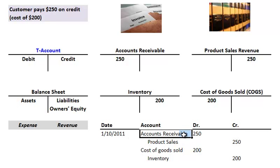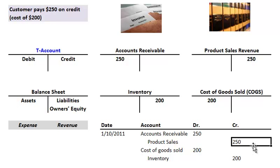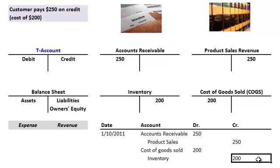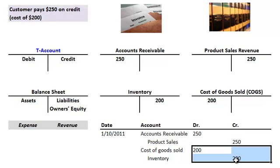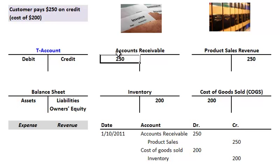The corresponding offsetting entry is a debit of the cost of goods sold account by $200 as well. In total: accounts receivable debit $250, product sales credit $250, cost of goods sold debit $200, inventory credit $200. The debits equal the credits, which is the key idea. And again, notice no cash has changed hands — we're shipping the product and issuing an invoice; the cash is going to come in maybe in a later period. So it's an accounts receivable asset account, not a cash account.